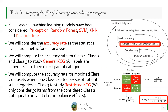After that, we will analyze the effect of knowledge-driven class generalization. We will consider five classical machine learning models: Perceptron, Random Forest, SVM, KNN, and Decision Tree. We will consider the accuracy rate as the statistical evaluation method. We will compute the accuracy rate for class 1, class 2, and class 3 to study general knowledge-driven class generalization, where all labels are generalized to their direct parent category. Then we will compute the accuracy rate of modified class 3, when one class 2 category substitutes subcategories in class 3 to study restricted knowledge-driven class generalization, considering only 15 items from the class 2 categories to prevent class imbalance effect.